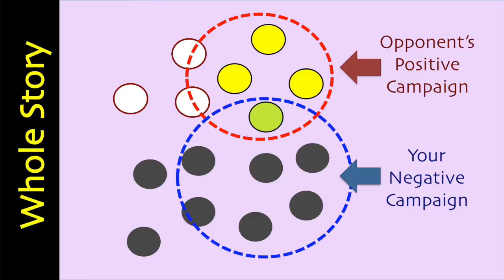In your positive campaign, you will try to paint the best possible picture for the benefits of your policy priorities. In the same way, your opponent will try to do the same. Your opponent will not tell the whole truth. Your opponent will try to spin things to make his policies look best. The voters do not have the time, resources or capability to evaluate the truth of your opponent's claims. So it is up to you. The objective of your negative campaign is to tell the voters the parts of the story that your opponent is not telling. You are in fact doing the voters a service by informing them so that they can make a better decision.